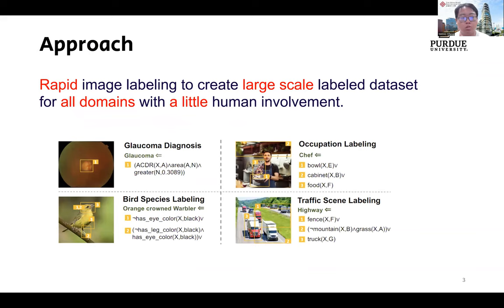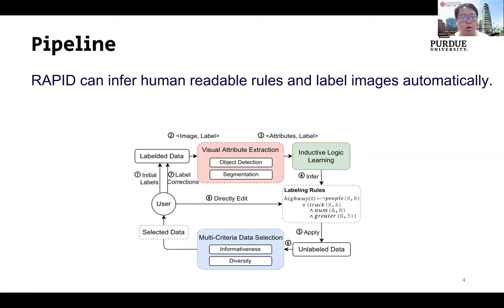To address this challenge, we propose a neuro-symbolic approach called RAPID, which uses rapid image labeling to create large-scale labeled datasets for all domains with little human involvement. RAPID infers image labeling rules from a small amount of labeled data provided by domain experts and automatically labels unannotated data using the rules.